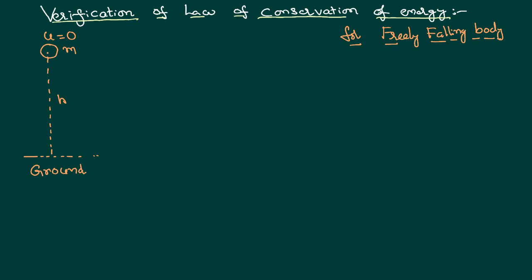The freely falling body starts from that point and reaches the ground. I would like to consider three different positions and at each position calculate the total energy of the system. The first position is the starting position itself, at the maximum height. The second position is at a certain height from that maximum height, let that height equal to h. Assuming the total height as capital H, the body B is at a height of H minus h from the ground. The third position is when it has just reached the ground.